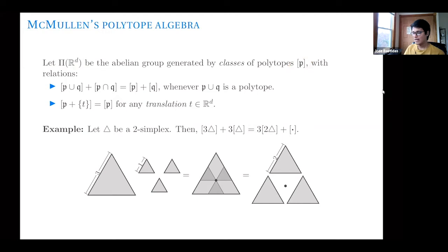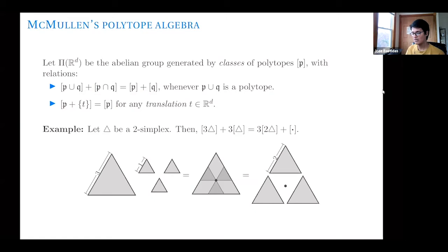The first relation is the valuation relation: whenever the union of two polytopes P and Q is again a polytope, which doesn't always happen, then the class of the union plus the class of the intersection equals the class of P plus the class of Q. These are formal sums, just formal, as a group. The second relation is that the class of a polytope and any of its translates are the same. So for us they're going to be the same class.